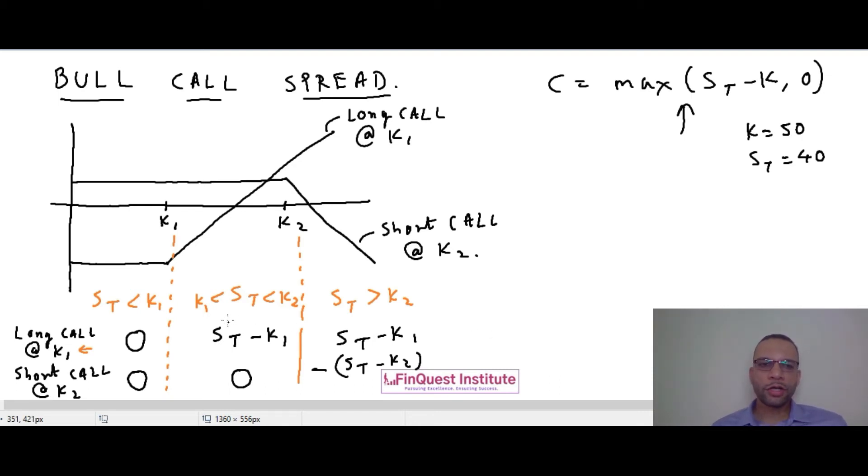We can also write the total payoff for the three scenarios. Looking at scenario number one ST less than K1, the total payoff would be zero. In the second scenario ST between K1 and K2, the payoff is going to be ST minus K1. In the third scenario, the total payoff will be K2 minus K1. I have simply summed up the payoffs for individual call options and arrived at the total payoff for all three scenarios.